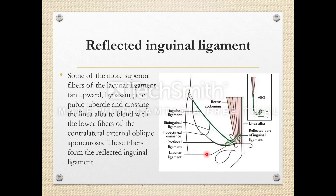The reflected inguinal ligament is formed by the most superior fibers of the lacunar ligament, which fan upward bypassing the pubic tubercle and cross the linea alba to blend with the lower fibers of the contralateral external oblique aponeurosis. These fibers come from the medial margin of the superficial inguinal ring, cross the linea alba, and interact with the contralateral reflected part of the inguinal ligament.